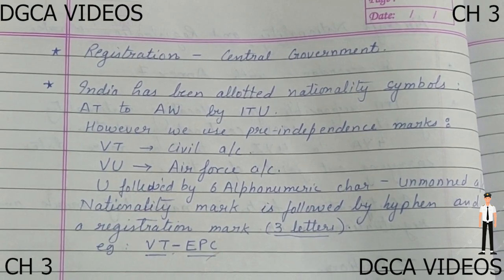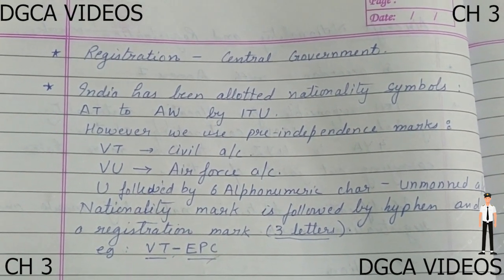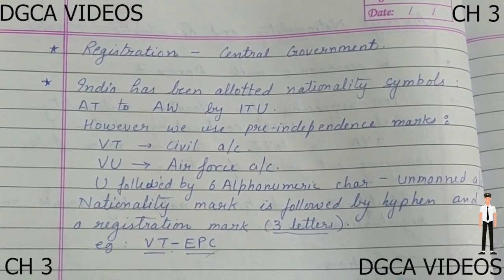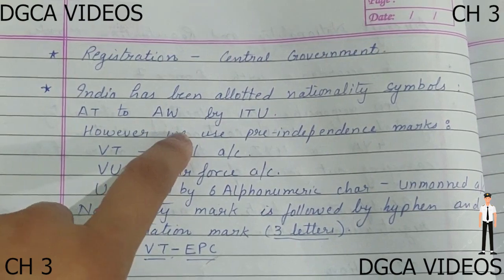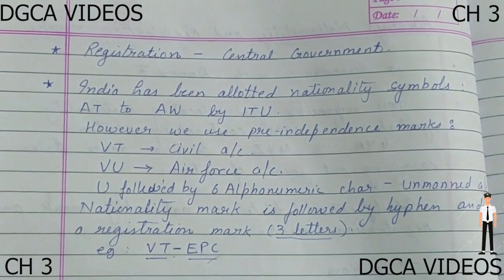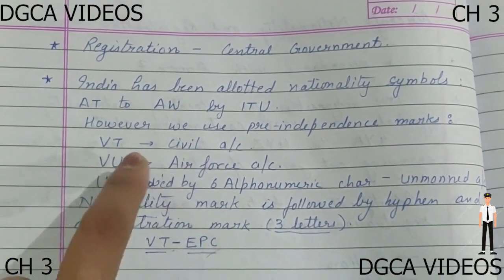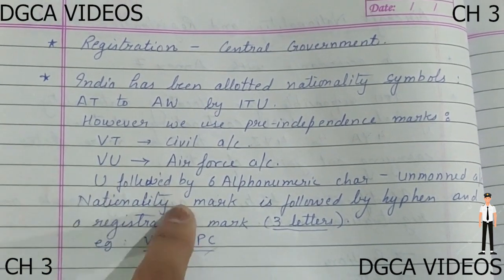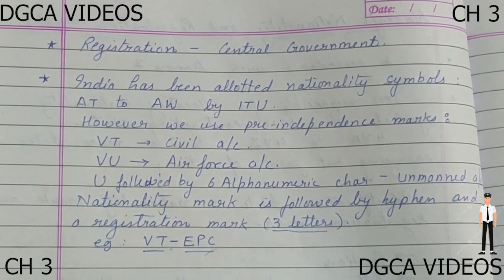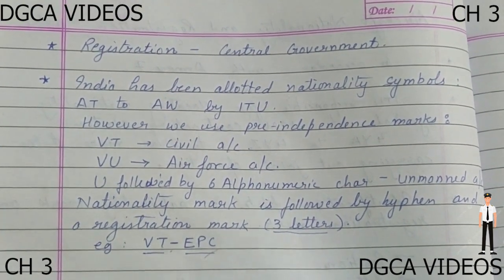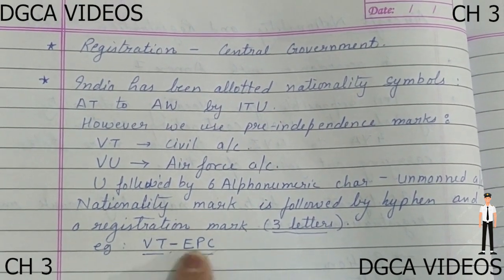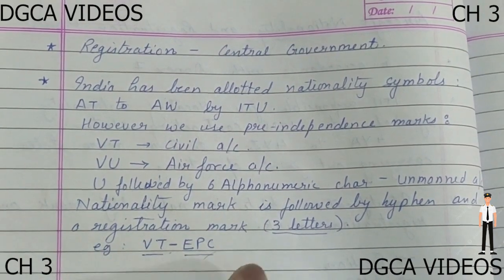Coming to the next point: the registration and nationality marks allotted to India. The ITU allotted AT to AW to India, but India does not follow this. Instead, it follows the pre-independence marks: VT for civil aircraft, VU for Air Force aircraft, and U followed by six alphanumeric characters for unmanned aircraft. The nationality mark is followed by a hyphen and then the registration mark — this is an example of both the nationality and registration mark together.